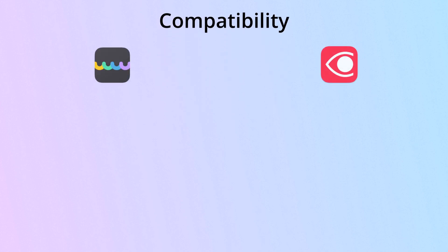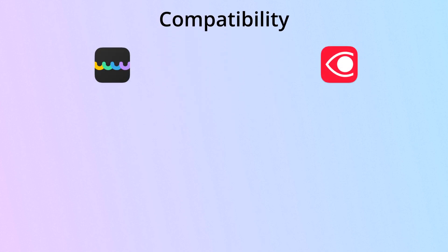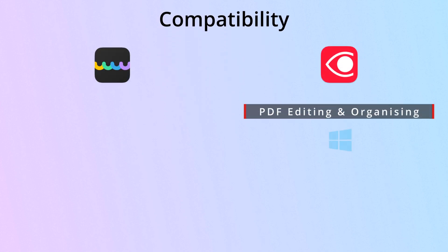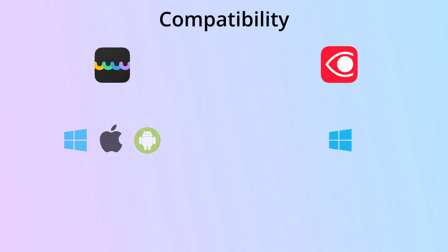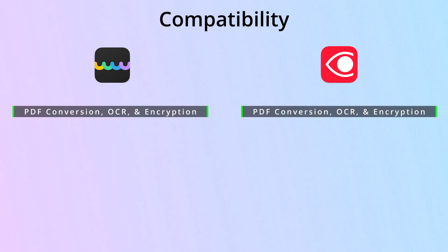Next, we have compatibility. ABBYY FineReader PDF supports PDF editing and organizing on Windows only, while UPDF offers these features across all major operating systems — Windows, Mac, iOS, and Android. Both tools shine with core features like PDF conversion, OCR, and encryption.